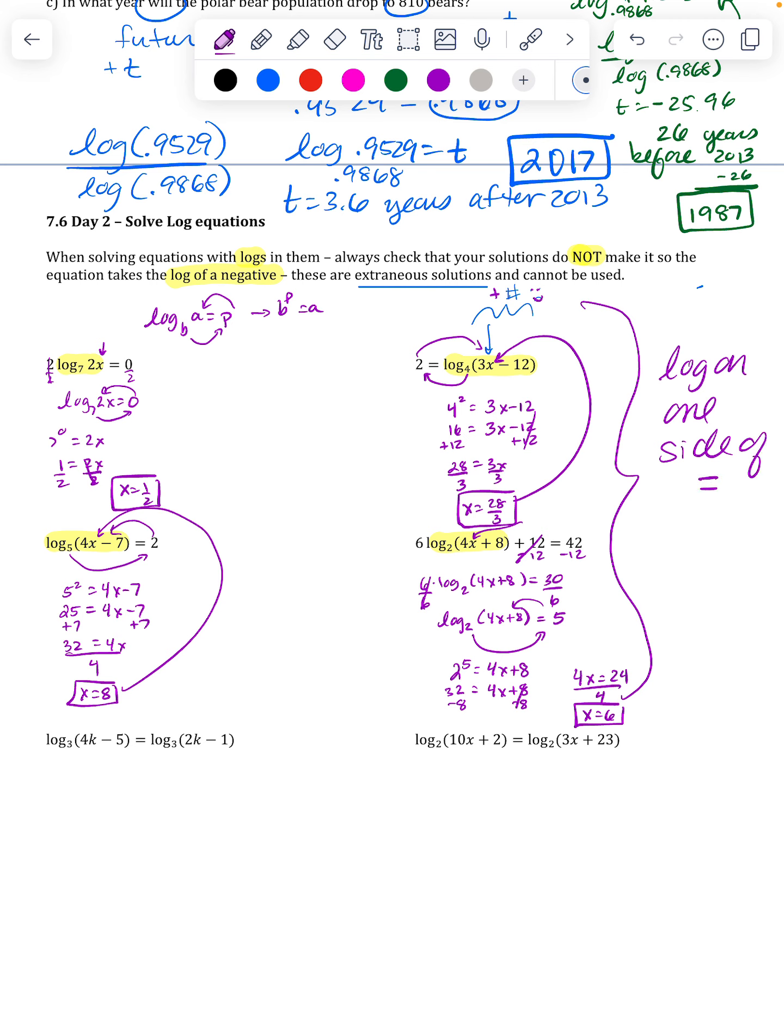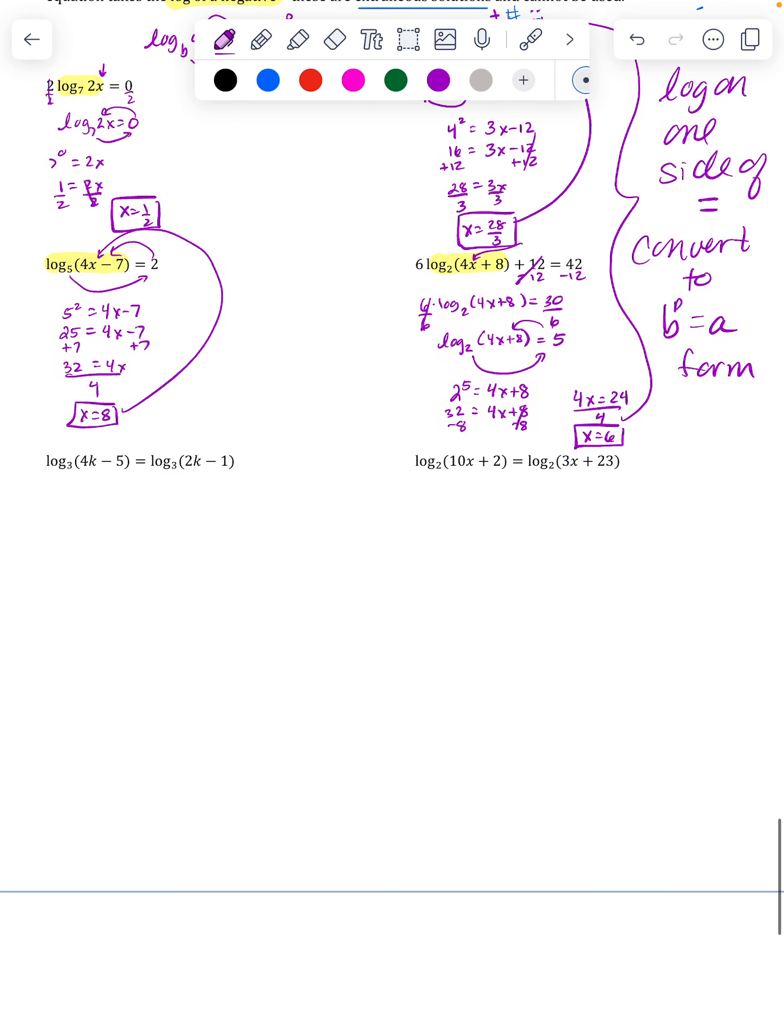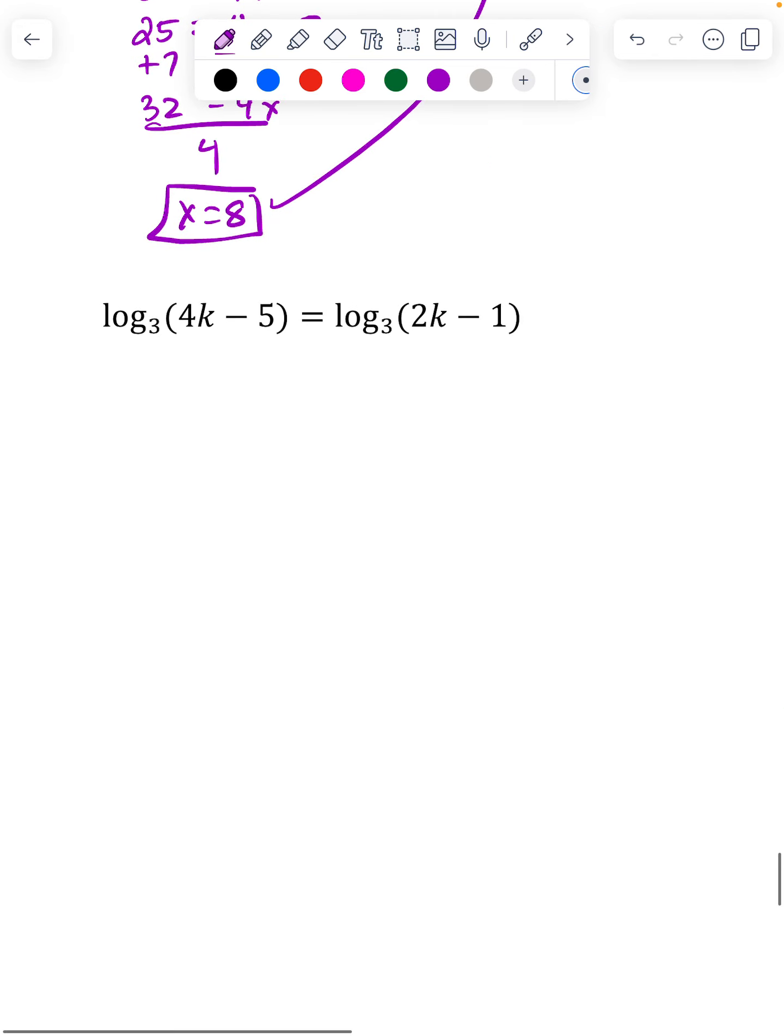Of the equal sign, and so we just used converting it or rewriting it to base to a power equals a number form. That worked for us. Now in these bottom two, you can see that there's actually logs on both sides of the equal sign. These look like they're going to be so confusing, and they're really not. Because if you have the log base 3 of something equals the log base 3 of something, the only way they're going to be equal is if the things inside the parentheses are equal. So just like anything else, if you have the same thing on both sides, you can cancel it out. So I ended up with just an algebra 1 problem.